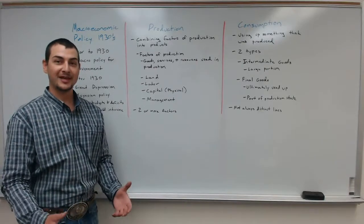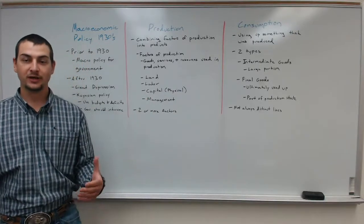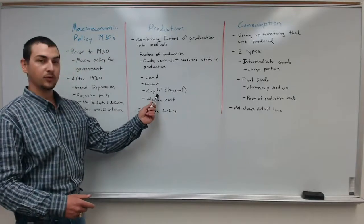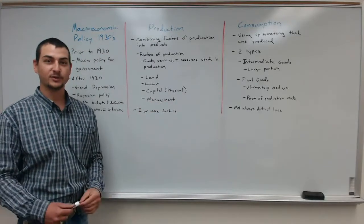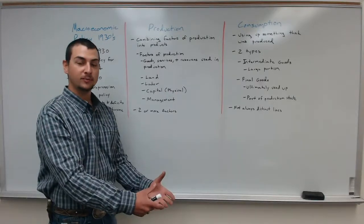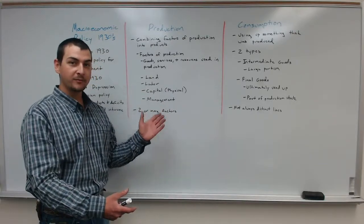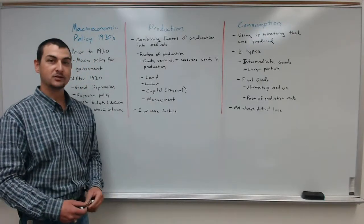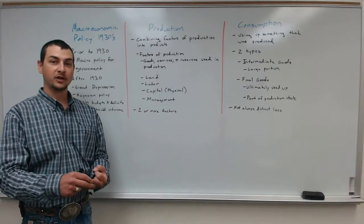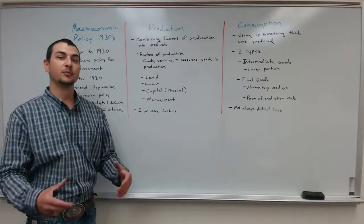Land is the physical space and area needed in order to complete production. Labor is human labor — what each hardworking individual is doing by providing their effort to develop a product. Then we have physical capital. There are two main types of capital: financial capital and physical capital. Financial capital is the money you're putting into the business, and that is not one of the main factors of production. Physical capital refers to tangible goods: equipment, actual buildings, machinery, and things of that nature used in the process of production.